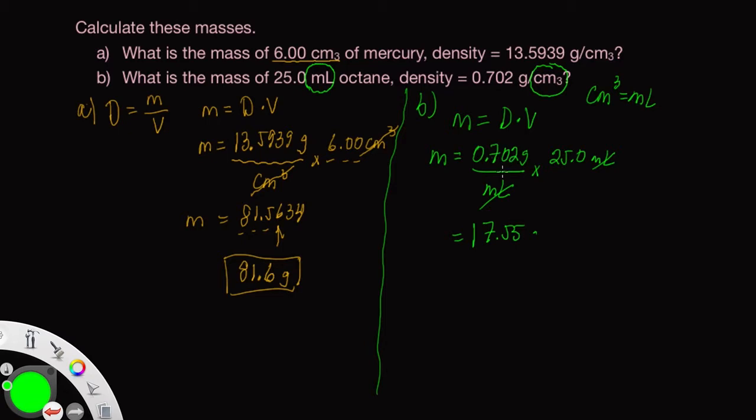So how many sig figs do we have in the density? It looks like three. And it looks like we have three sig figs here. So we want three sig figs in the answer. This number is five or greater. So we round this tenths place from a five to a six.